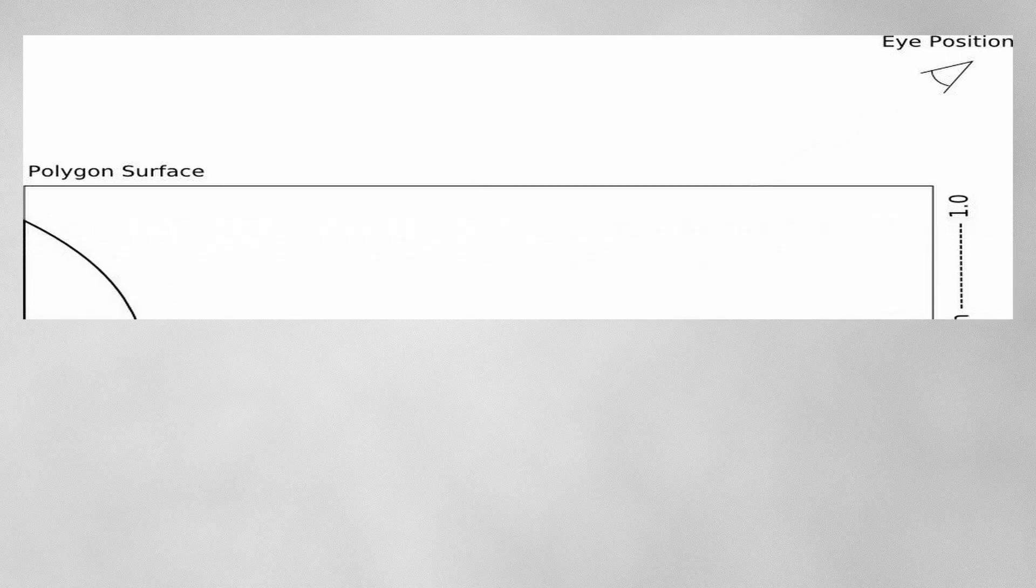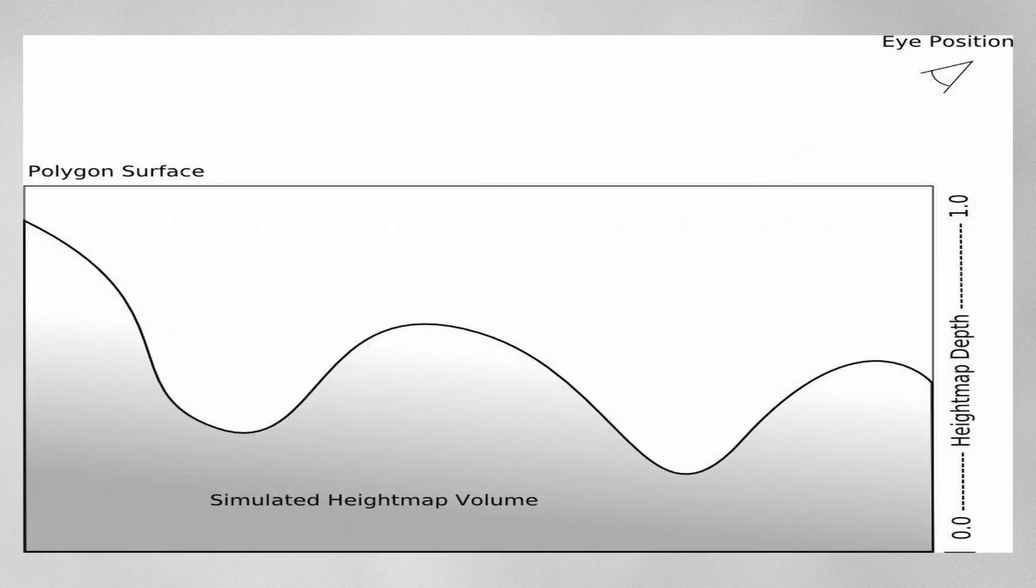So imagine this is our surface of mesh and I look at my surface in front view, and this is the eye position or camera position. Now if I bring my height map to this space and I put it under my surface it would look like this.